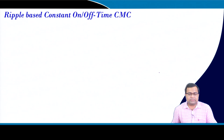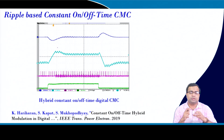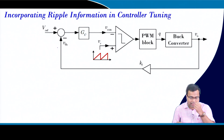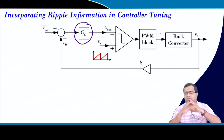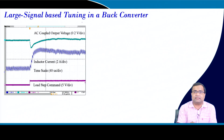A proposed hybrid digital current mode control takes the best of constant on-time and constant off-time by a simple modification of the clocked signal without changing the hardware, retaining very fast transient response.